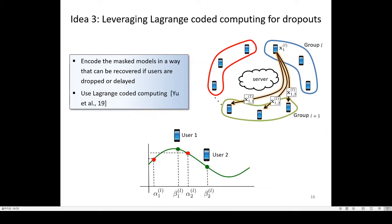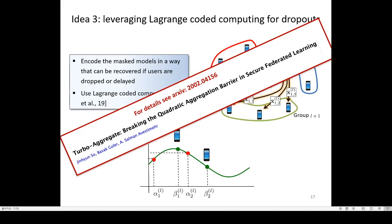The third component of Turbo Aggregate is to add aggregation redundancy by using Lagrangian coding to enable robustness against delayed or dropped users. In particular, injected redundancies are passed from one group to the next, so that the added redundancy can be used to reconstruct the missing information due to user dropouts. Please refer to the paper on arXiv for full details.